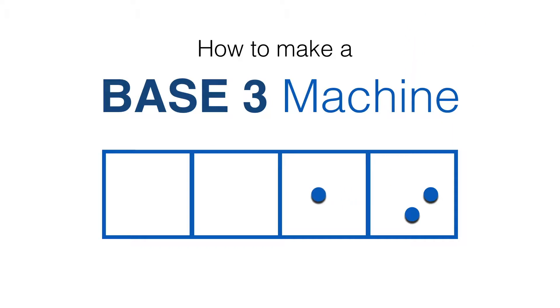We've learned how to make a base 3 machine. We put in a bunch of dots and then do a bunch of explosions, and we end up with a special code. But what if we have a code and we want to get back to the number of dots we put into the machine? That's what we're going to talk about in this video.